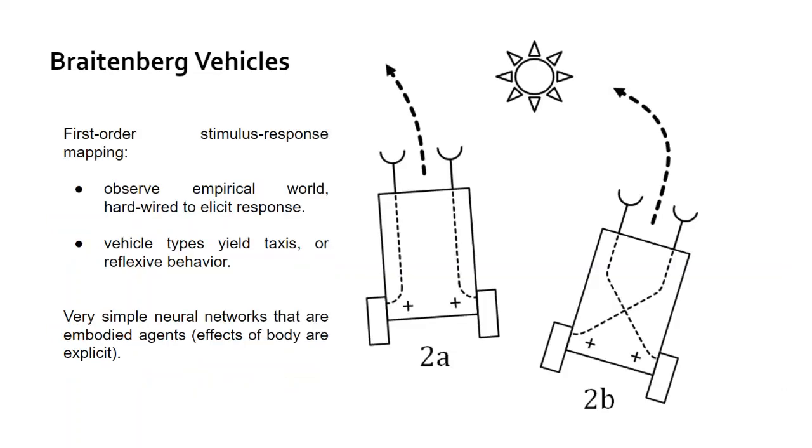The first part is the representational-free model, represented by the Braitenberg vehicle. The Braitenberg vehicle is a first-order stimulus response mapping. The vehicle observes the empirical world and is hardwired internally to elicit a certain response to that stimulus. We have a sun in the sky, which is a light source, and the vehicle is designed to either repel from that source or be attracted to it. In that way, the vehicle yields a type of taxis or reflexive behavior. This is all generated by a very simple neural network that is also embodied, so the effects of the body are explicit.